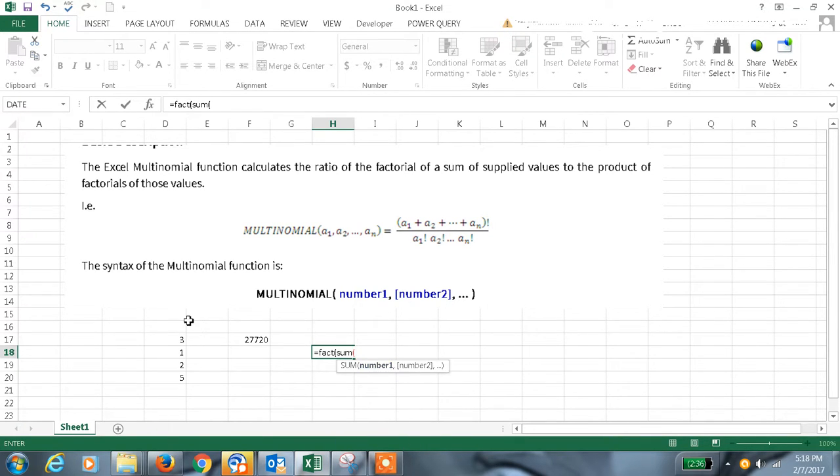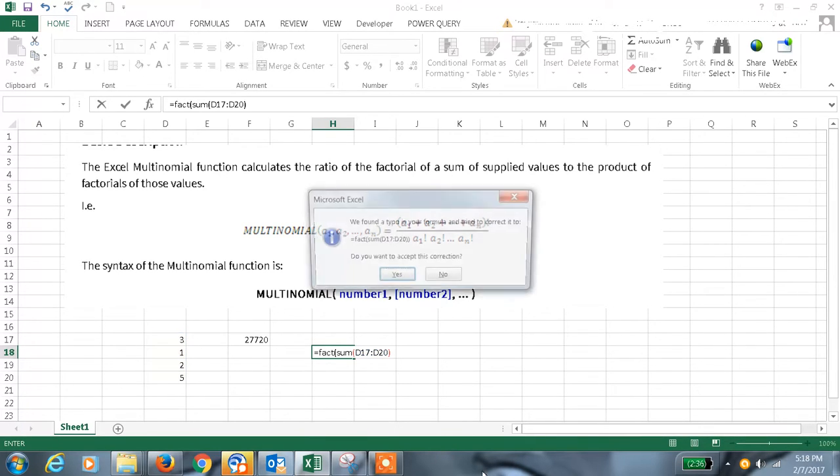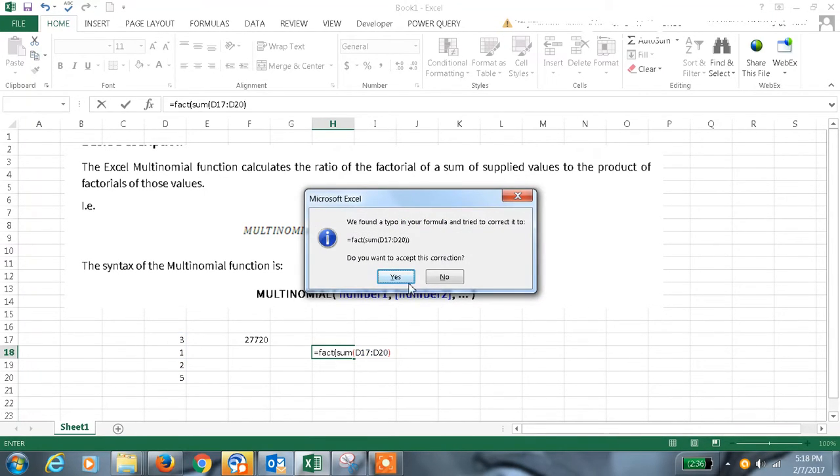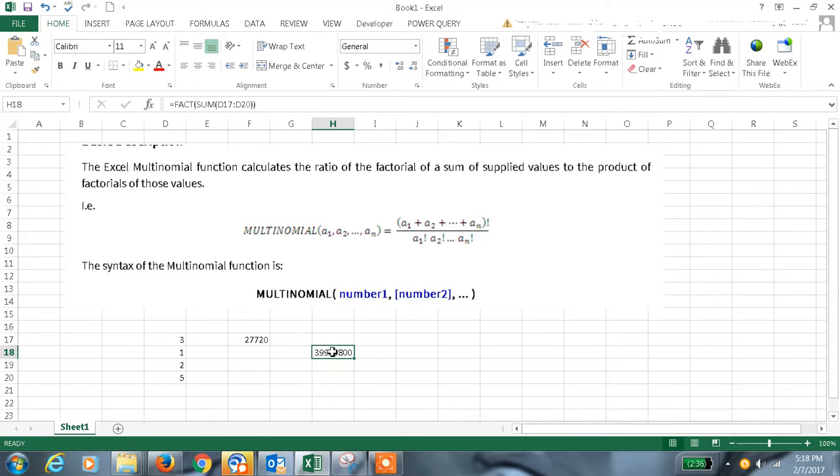And the second one is factorial of each value. The factorial of these values should be the product—we should do the multiplication.